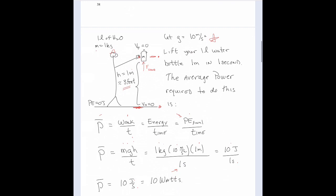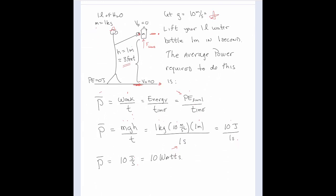A watt is a joule per second. To give you an idea of what one watt of power means: here's you with one liter of water, which has a mass of a kilogram, and you're going to lift it about three feet. It's at rest at the floor, you lift it up and stop — so it's at rest again. Potential energy at the floor is zero, and using g = 10, you lift your one-liter water bottle in one second. The average power required to do that — the power your hand has to deliver — is 10 joules per second.